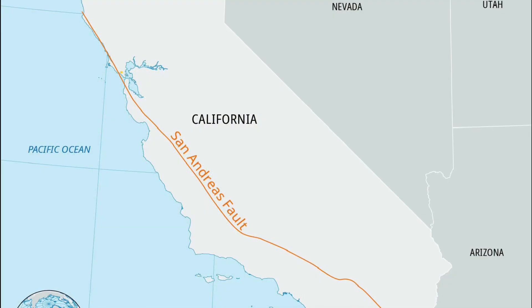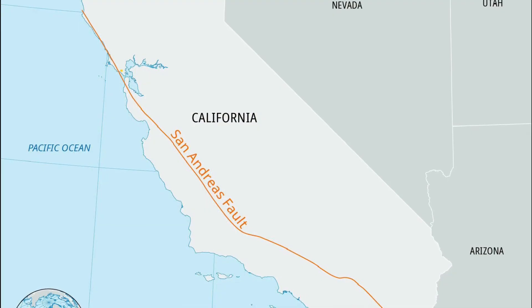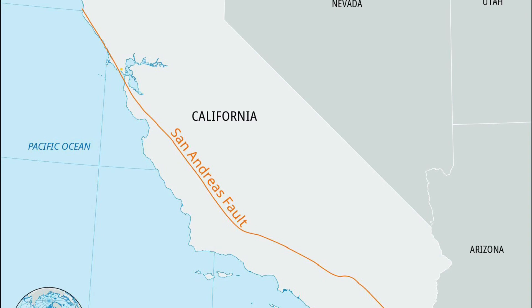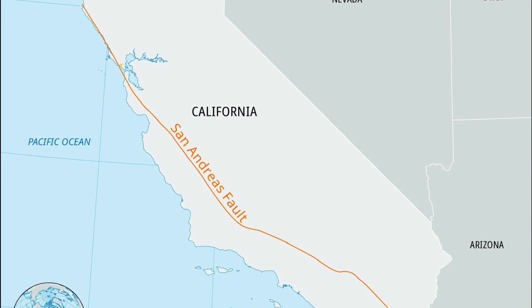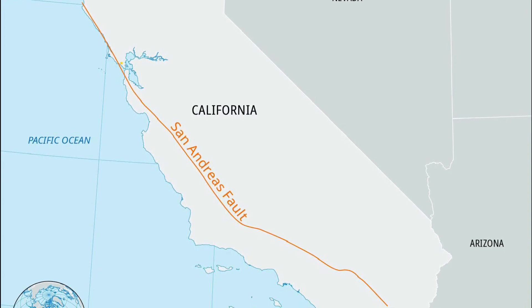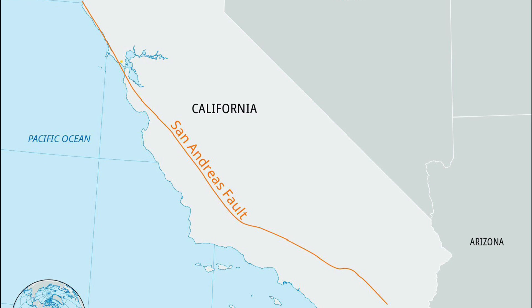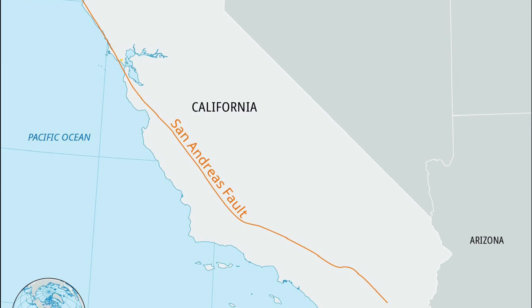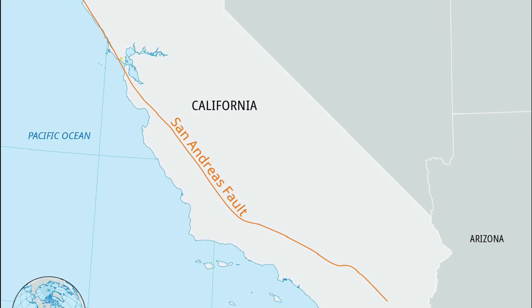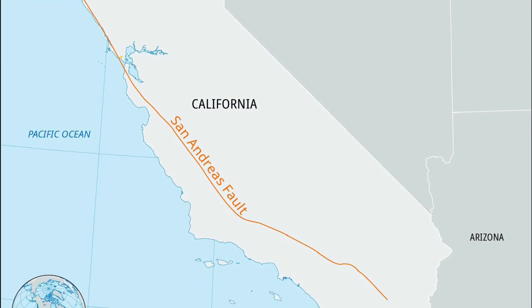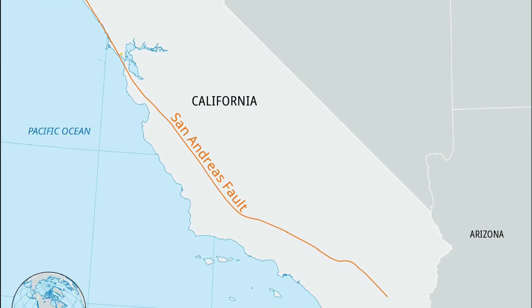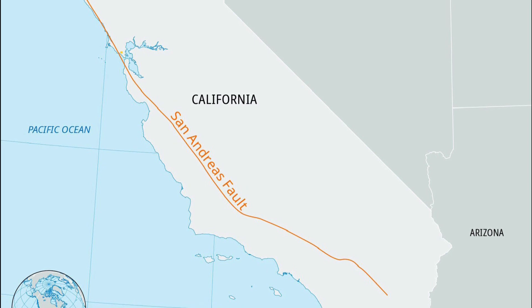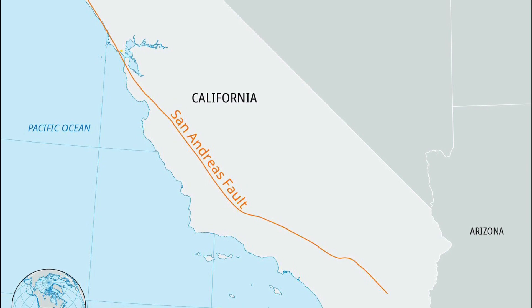Let's do a more thorough introduction of Mount Tam. It's the highest peak in the Marin Hills, which are also a part of the northern California coast ranges — a range on the coast, a very creative name.